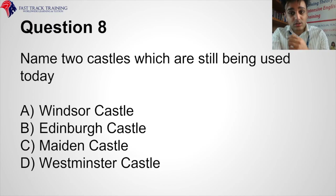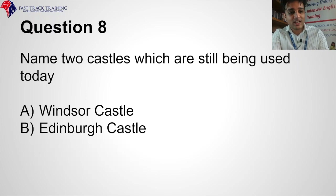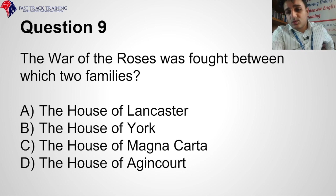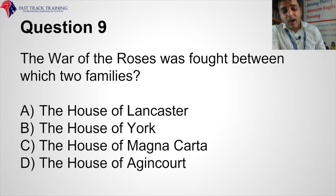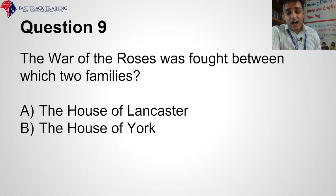Question seven: What is the Magna Carta? A document signed by the king to reduce his power — the correct answer. Question eight: Name two castles still being used today. Windsor Castle and Edinburgh Castle — correct. Question nine: The War of the Roses was fought between which two families? The House of Lancaster and the House of York — correct.